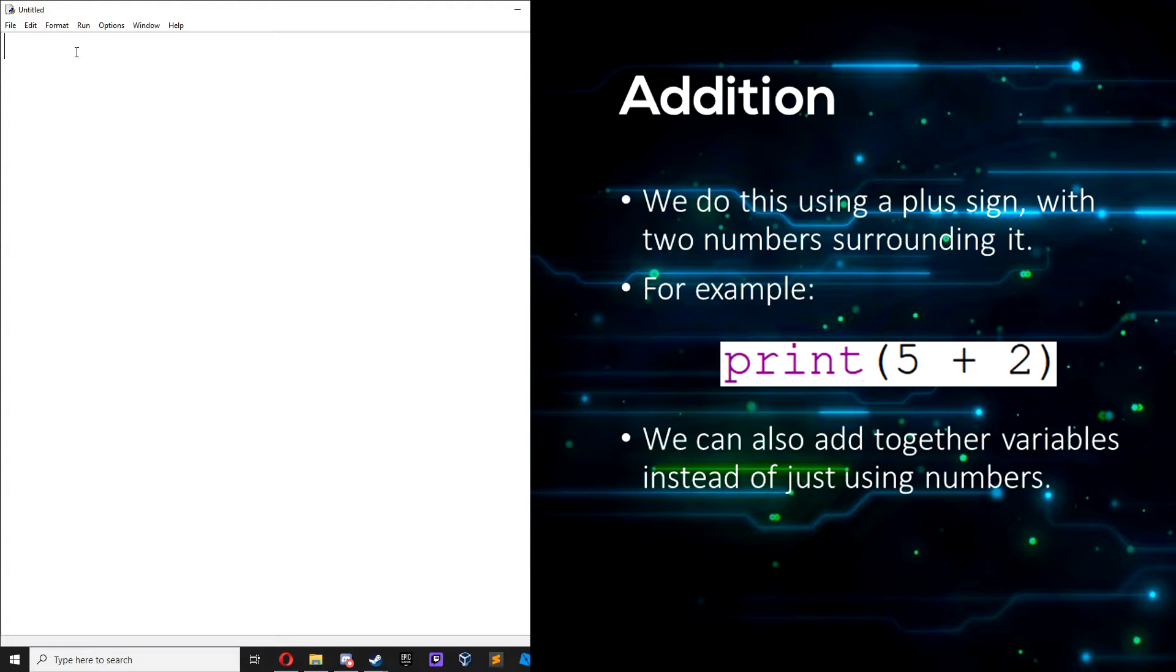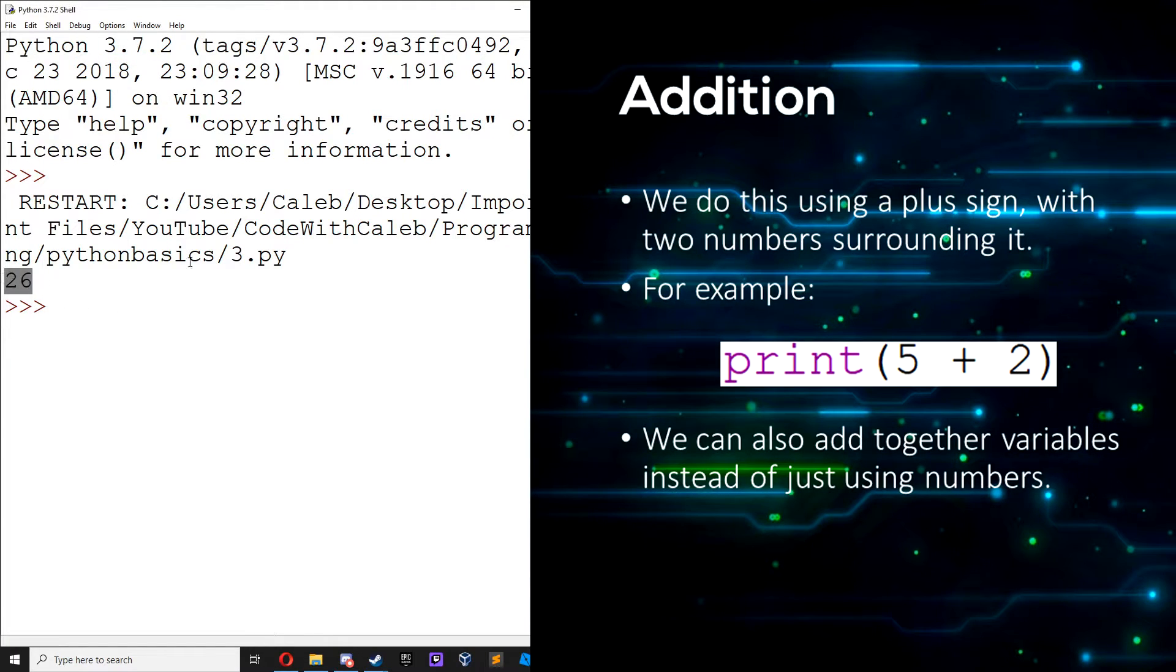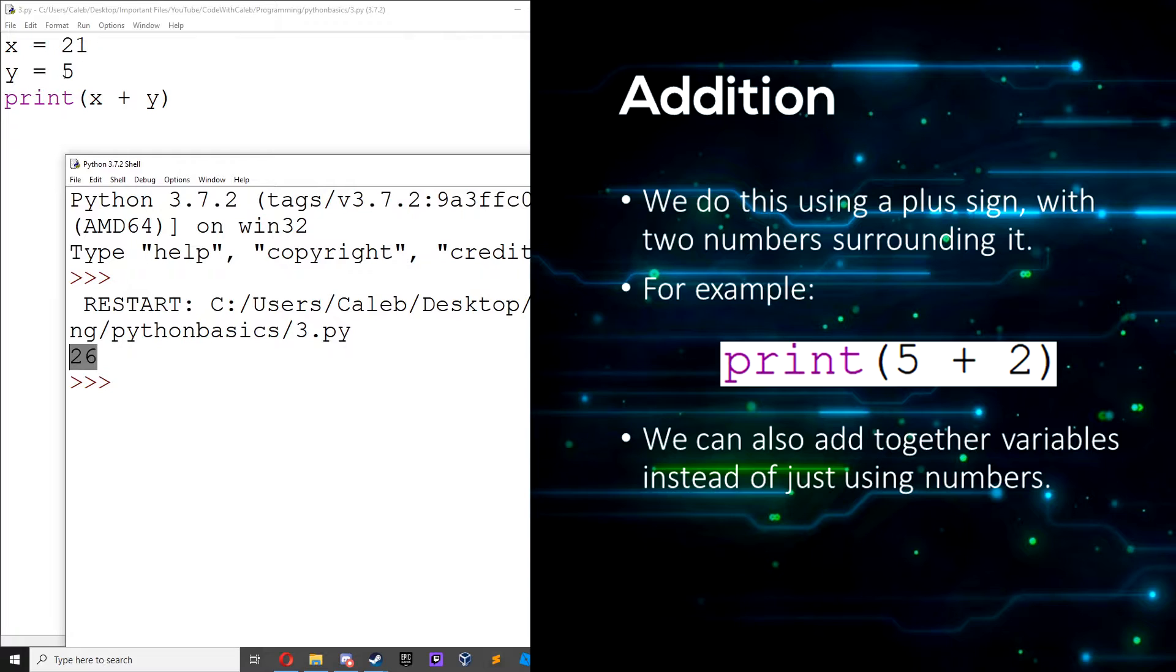So first off there is addition. We do this using a plus sign. So let's make two variables like we learned in the last episode. Let's call one x equals 21, y equals 5, and then we can do print x plus y. Save it. And if we go to run, run module, we get 26 because 21 plus 5 is 26.